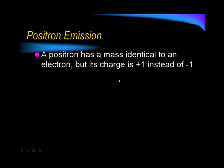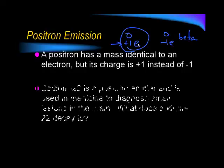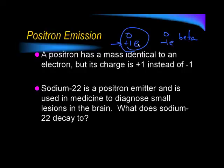So, a positron is an antimatter molecule or particle. It's the opposite of an electron. So, it has a mass identical to an electron, but its charge is plus 1 instead of minus 1. For its symbol, it's written like that. Be sure to write the plus sign. That tells you the difference between that and this is a beta particle with the minus 1. So, make sure you use the plus 1 for the positron. So, sodium-22 is a positron emitter and is used in medicine to diagnose small lesions in the brain. What does sodium-22 decay to? So, since it's a positron emitter, it's going to give off the positron and the positron will be on the right side of the arrow. So, you should pause and write this equation.